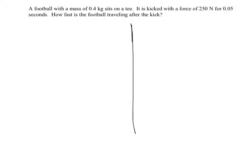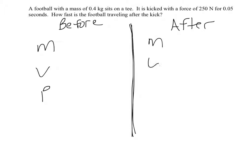So we start by drawing a vertical line, and we've got our before and our after. There's only one object, the football, so we'll have an MVP on one side and an MVP on the other. The football has a mass of 0.4 kilograms, both before and after it gets kicked. It does not change.